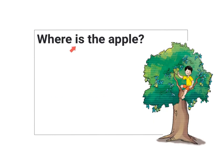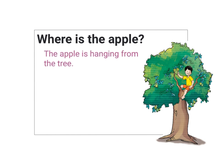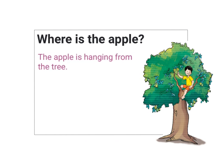The first question is: where is the apple? To answer this question, I have to look at the picture and think about the answer. In this picture, the apples are hanging from the tree. So I will write the answer: the apple is hanging from the tree.